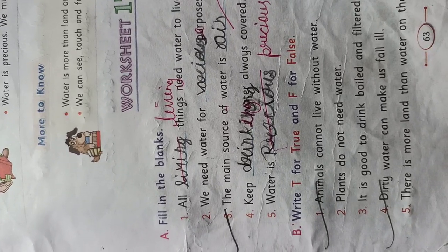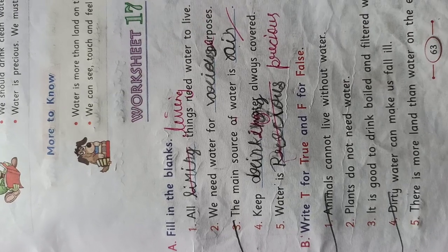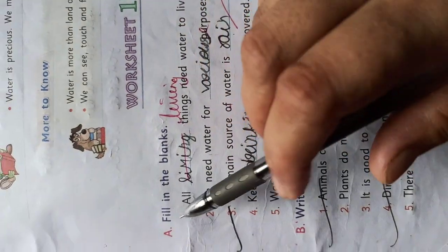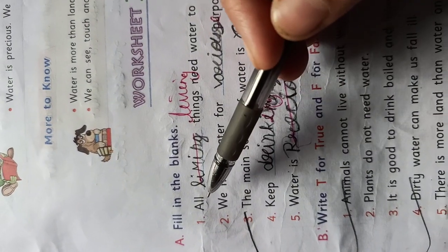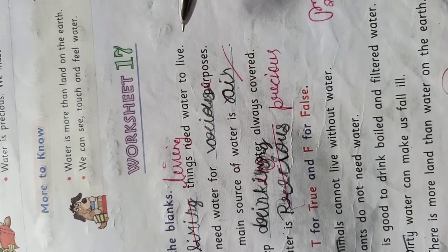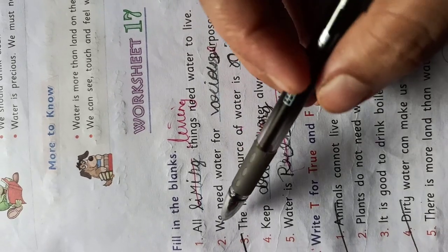Welcome students, this is your last chapter of GS and last exercise of chapter 17. First, section A: Fill in the blanks. All [blank] things need water to live. All living things, L-I-V-I-N-G, living things.